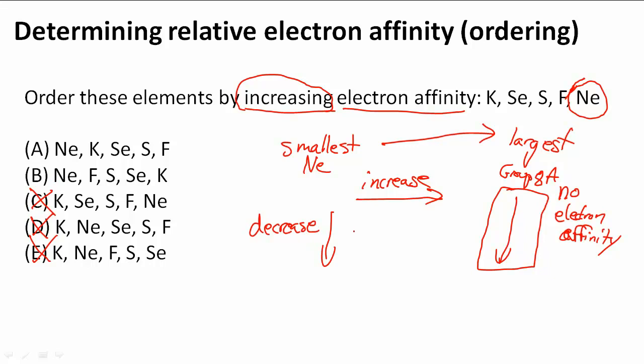So we know that it increases as we go to the right. So we're going to look for the element that is close to the left. And we're looking at K and we're going to make sure that Se is in that same row. And we know that must mean that K is smaller than Se.